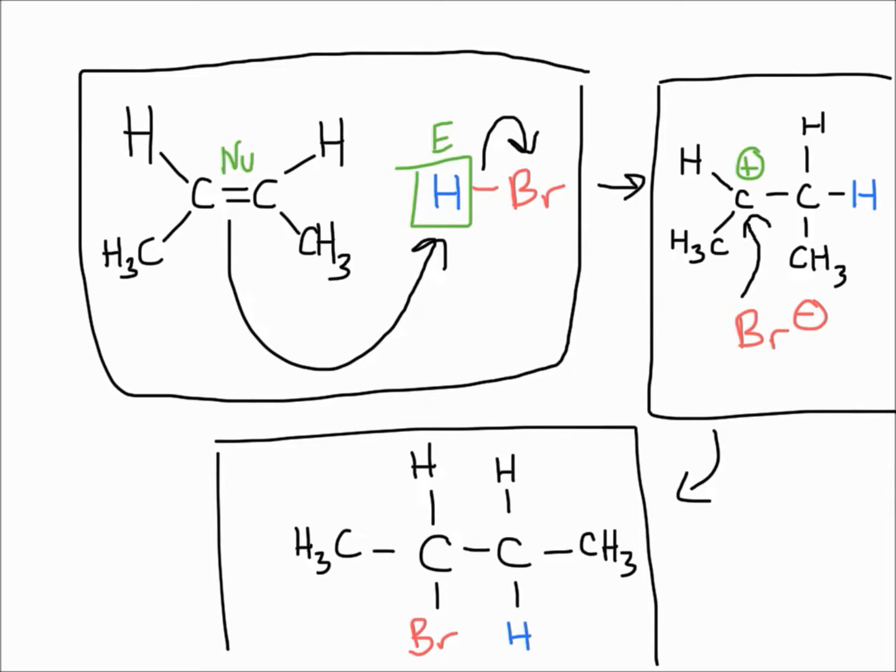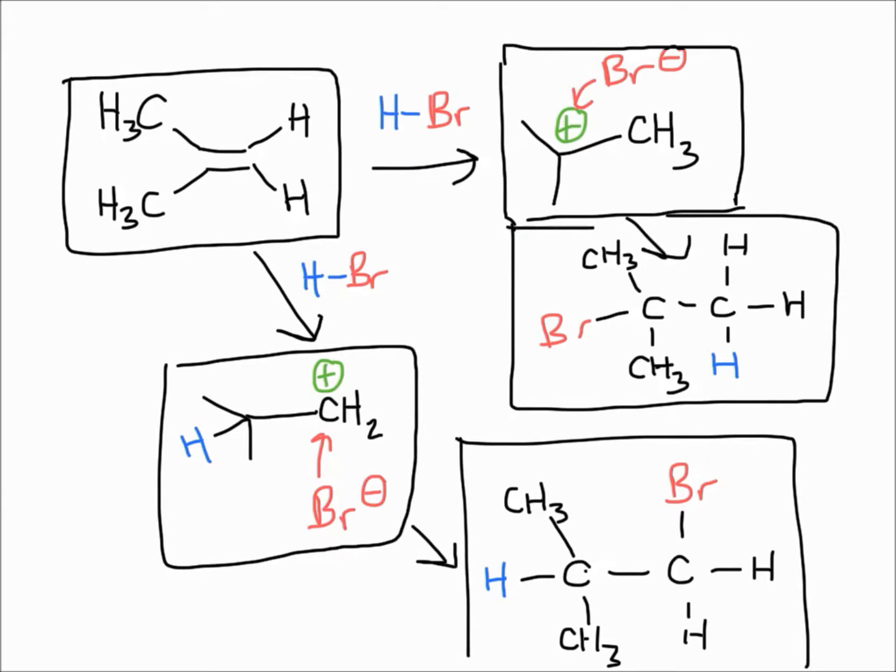Now you might be wondering, how do I know which carbon of the alkene becomes a carbocation? Let's talk about that a little bit. Here we're going to look at what happens and how you decide which carbon the halogen is going to get added onto.